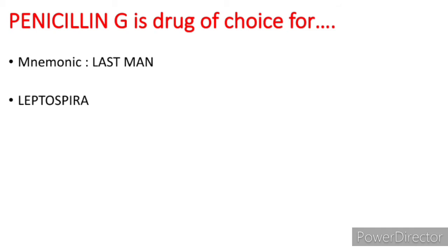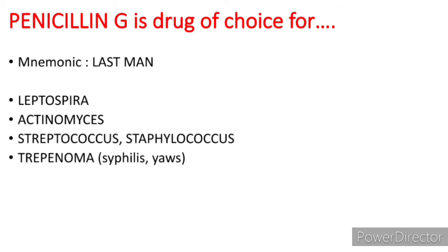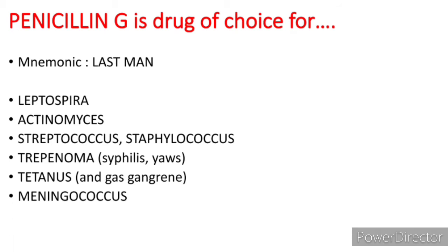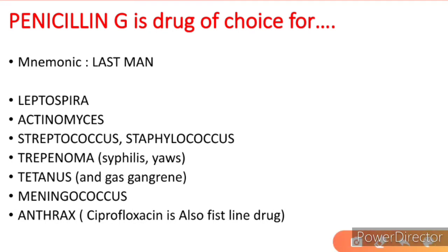Penicillin G is the drug of choice for several organisms. Remember the mnemonic LAST MAN: Leptospira, Actinomyces, Streptococcus and Staphylococcus infection, Treponema, Tetanus and the infection gas gangrene. Treponema is the organism; syphilis and yaws are the diseases. Also Meningococcus and Anthrax. Here you can easily remember it with LAST MAN.